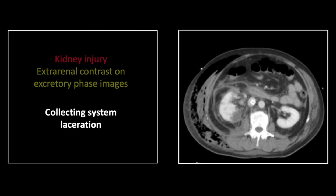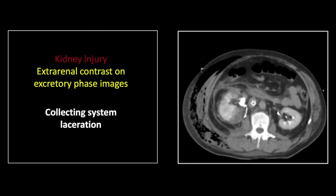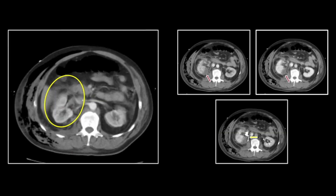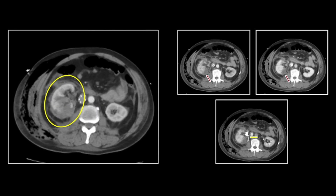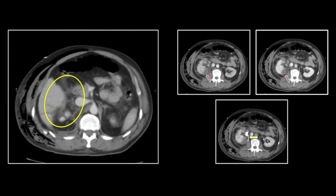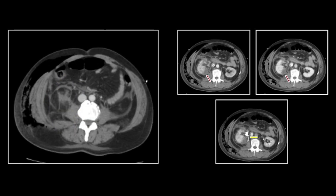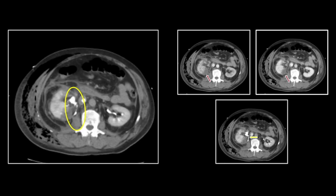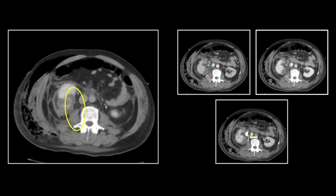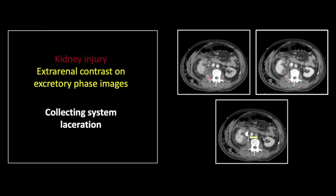On the later medullary phase, that persists. And only on the delayed excretory phase images do we finally see excreted contrast spilling from the lacerated collecting system. Here on CINI, that's the corticomedullary phase, and now the medullary phase — that contrast excretion only apparent on the latest of the phases. So that is a collecting system laceration.